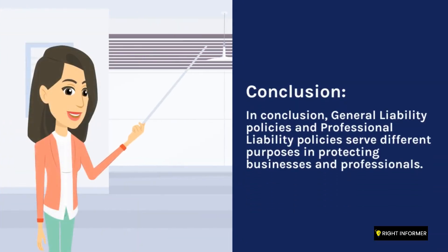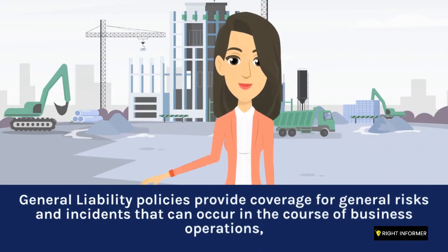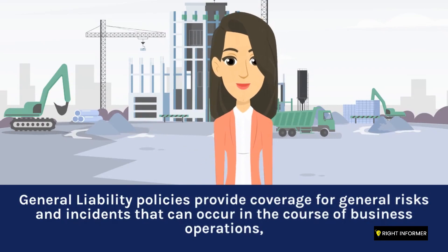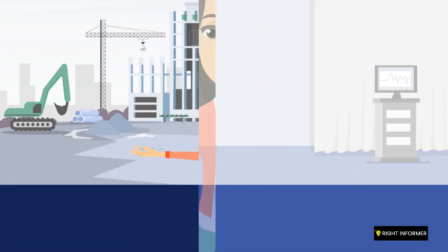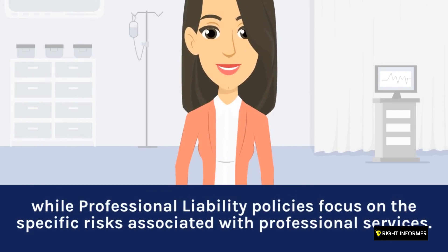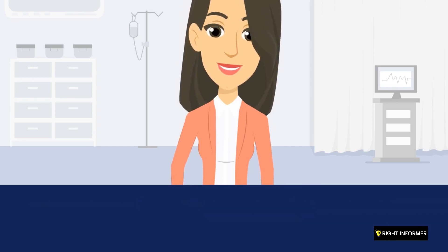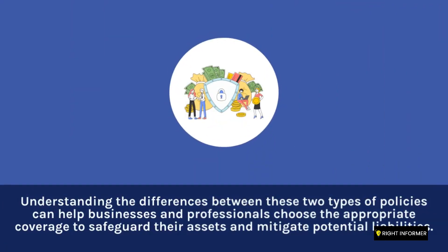In conclusion, general liability and professional liability policies serve different purposes in protecting businesses and professionals. General liability policies provide coverage for general risks and incidents that can occur in the course of business operations, while professional liability policies focus on the specific risks associated with professional services. Understanding the differences between these two types of policies can help businesses and professionals choose the appropriate coverage to safeguard their assets and mitigate potential liabilities.